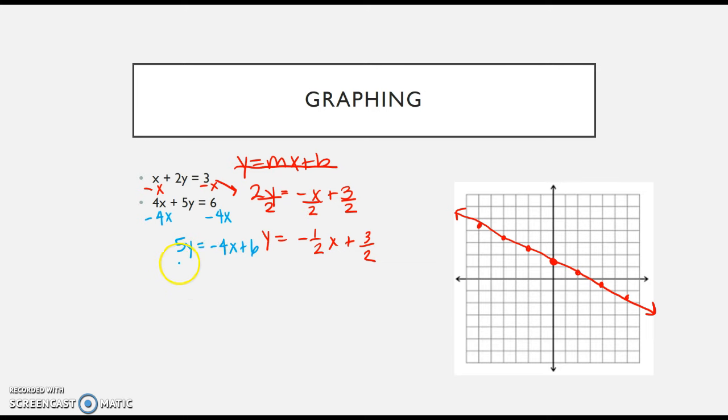Negative 4x plus 6, divide by 5. We get y equals negative 4/5 x plus 6/5. Now 6/5 is my y-intercept, and that's 1 and 1/5, just over 1.